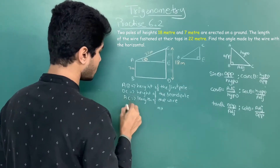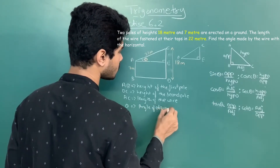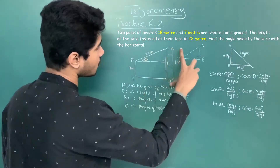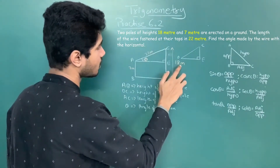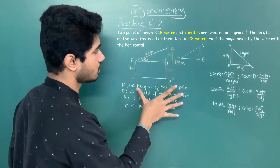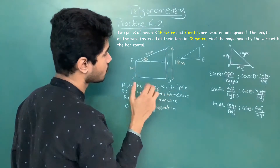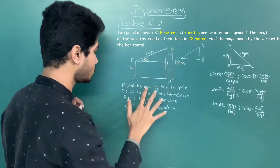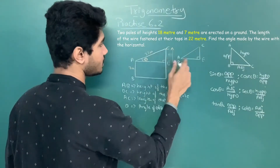Theta is the angle of elevation made by the wire. This uses the same concept as the previous question — same idea of height of a building, height of a pole, and angle of elevation. We will use the same concept and make a triangle to make it understandable.